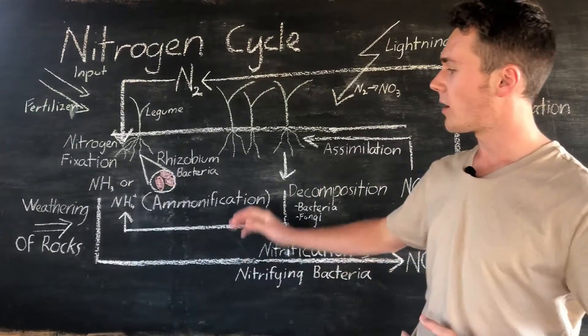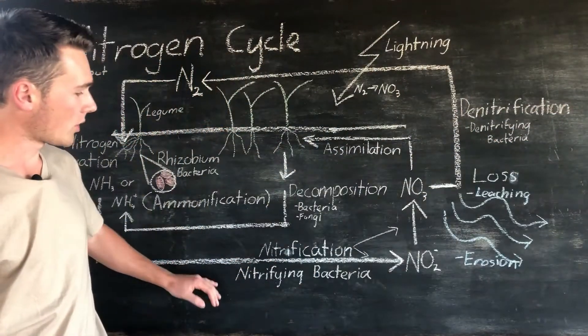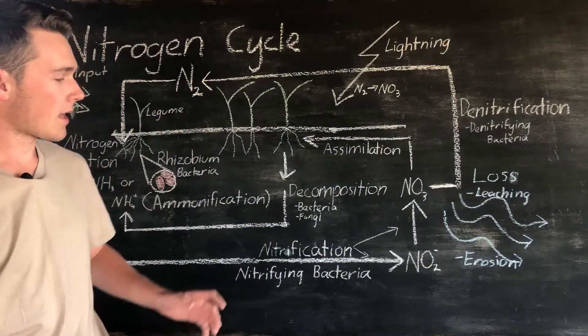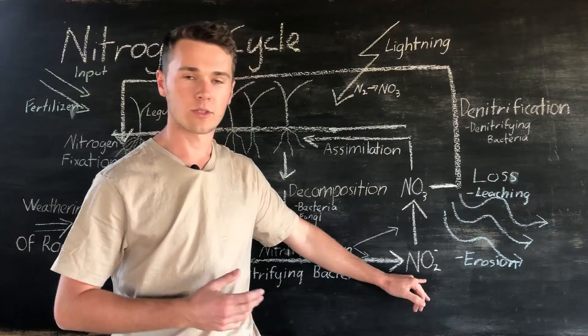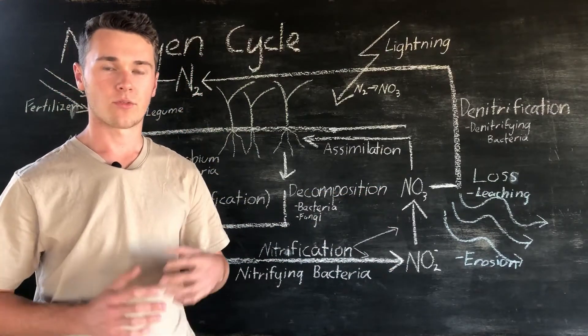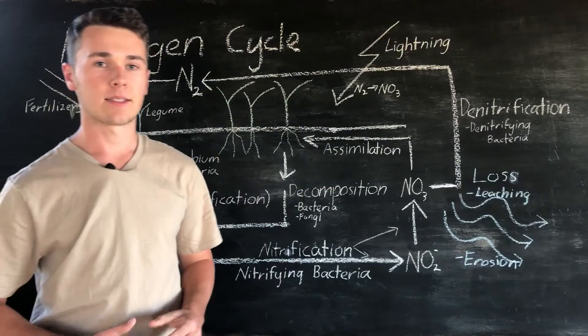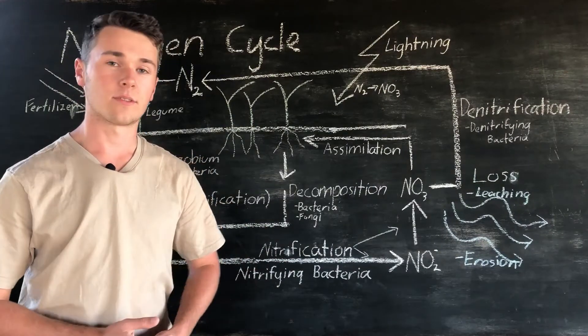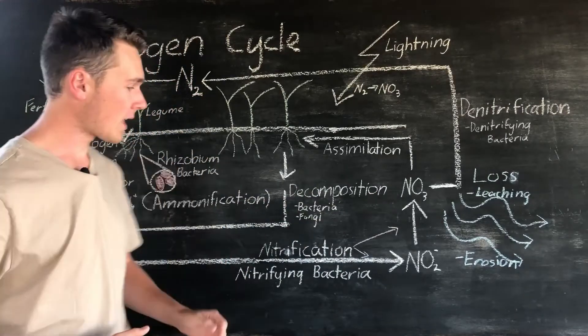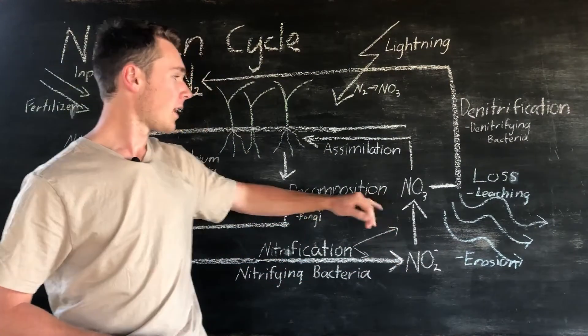What happens next is that our ammonia undergoes nitrification. Nitrification occurs when nitrifying bacteria convert ammonia into nitrite. This is where they remove a hydrogen and add on oxygen atoms. From here it then moves into nitrate. Now nitrate is readily available for our plants' uptake via assimilation and from here the plants can then draw it up through their roots and then use the nitrogen for their growth and development.